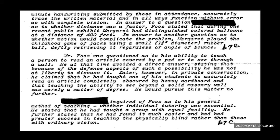He brings in his 17-year-old daughter who can do some really amazing things that only super psychic children in other parts of the world have been proven to be able to do. He talks about how it's really just a matter of degree — he claimed he taught one of his students to accurately read an article completely obscured by heavy cardboard, and that teaching the ability to see beyond a solid masonry wall was merely a matter of degree. It didn't matter how much material was obscuring the object from the subject.